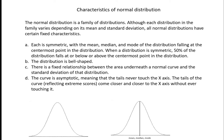A: each is symmetric with the mean, median, and mode of the distribution falling at the centermost point. B: the distribution is bell-shaped. C: there is a fixed relationship between the area underneath the normal curve and the standard deviation of that distribution. And D: the curve is asymptotic, meaning the tails never actually touch the x-axis, but come closer and closer to it the more extreme the scores become.